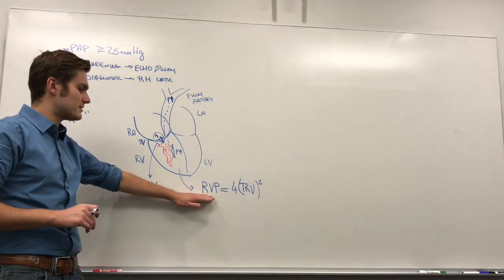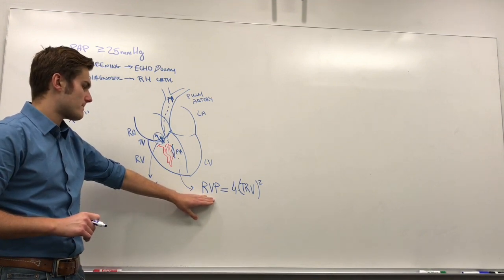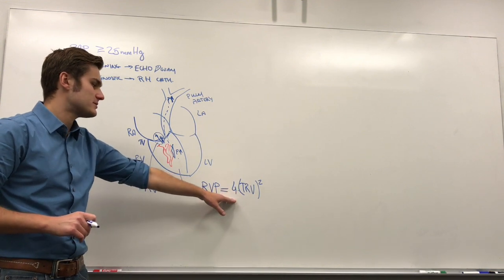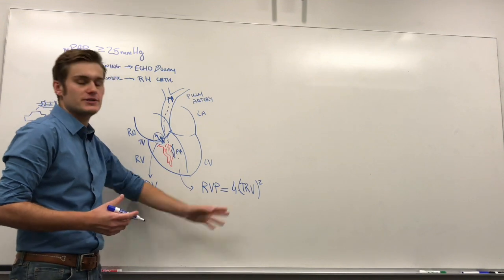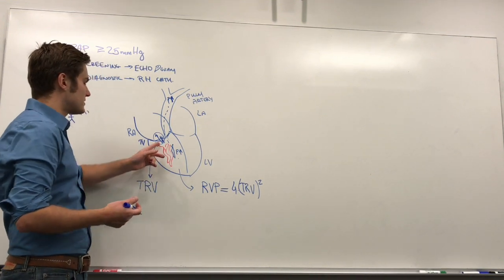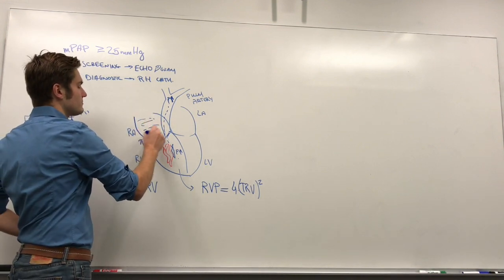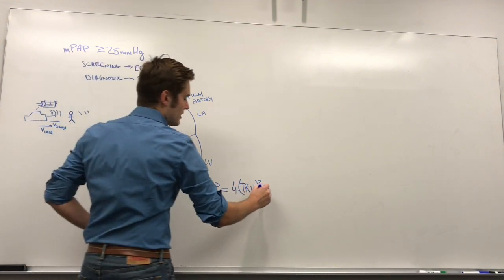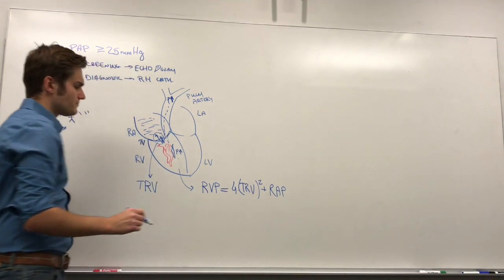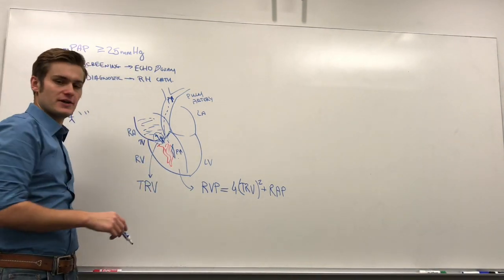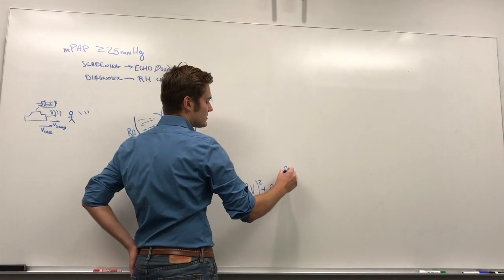We've got this pressure here that can be estimated like this, based on just the jet velocity. And we also need to add a correction factor, because this jet is actually pushing against the right atrium, which already has some blood in it. So we also have to add the right atrium pressure here, because we need that as a correction factor. We can also call this the central venous pressure. These are interchangeable.